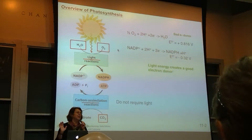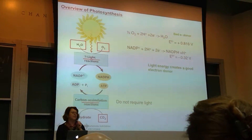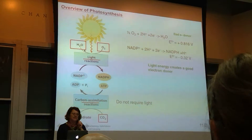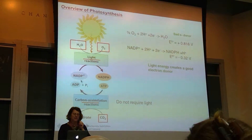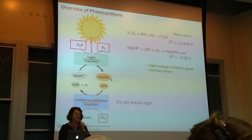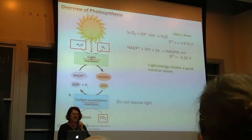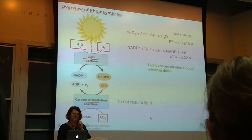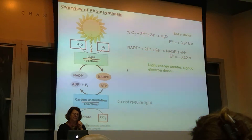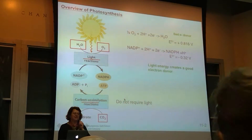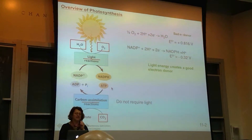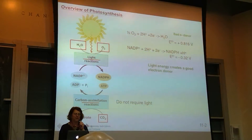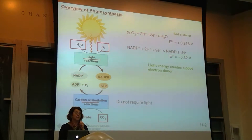Some people really dislike calling them 'dark reactions' because they require products produced by light. Basically you have conversion of H2O to oxygen, and NADP goes to NADPH — that's being reduced — and you're forming ATP. NADPH and ATP are formed in the light reactions, which is what we're going to talk about today. That ATP then drives the formation of carbohydrates from CO2, which we'll talk about Wednesday.